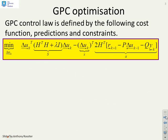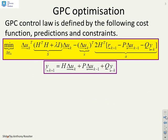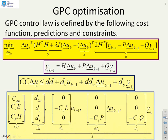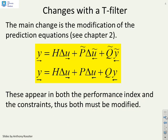A summary of what we did in the previous video: we had a quadratic performance index, predictions, and constraint inequalities. The definition of the constraints was covered in the previous video, so we won't go through those in detail. That was the simple GPC setup. What changes when you add a T-filter?